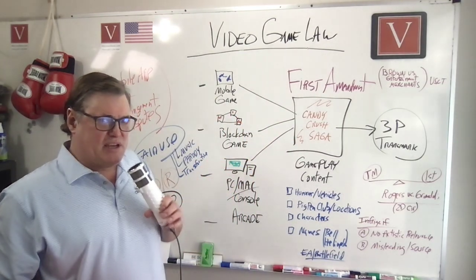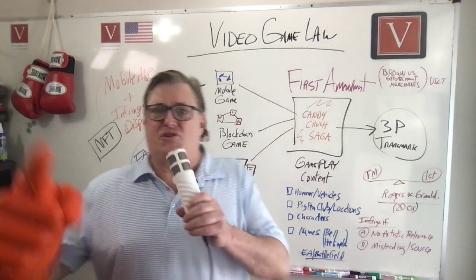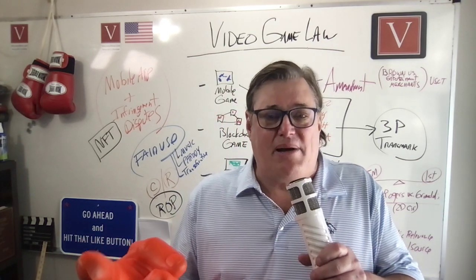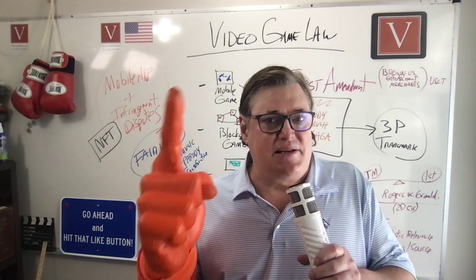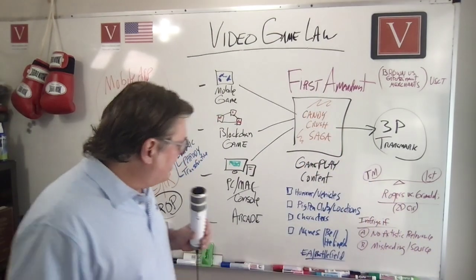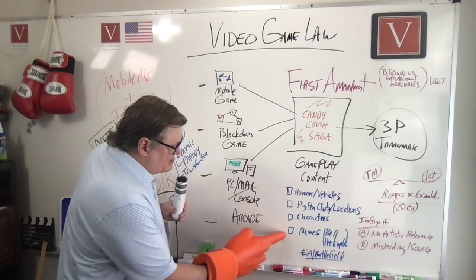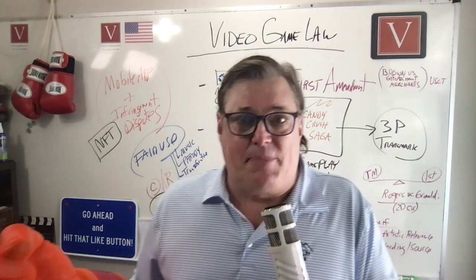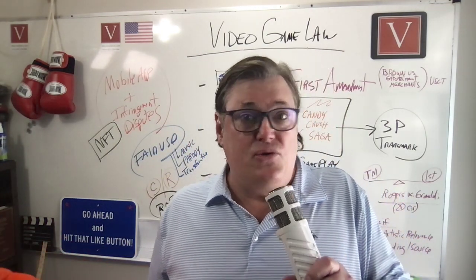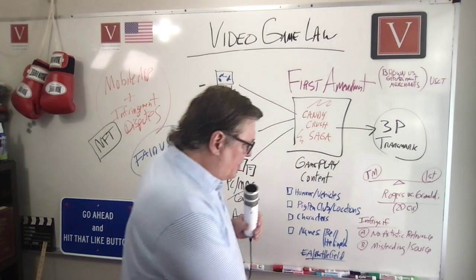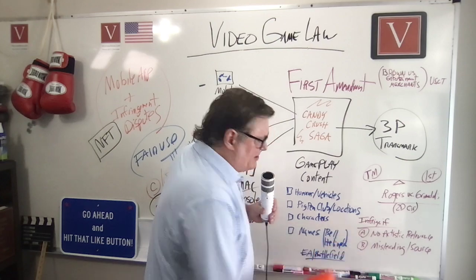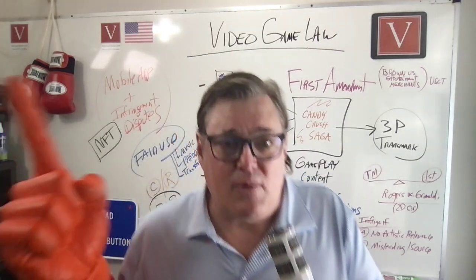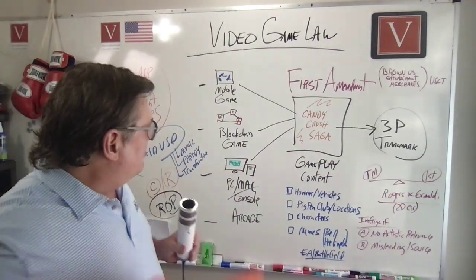What kind of content are you using in your video game? Characters — are you borrowing characters from Star Wars or Disney and bringing them into your video games? You need to be careful about that. Those finely defined characters can be subject to copyright protection. Names — there was a game where Electronic Arts had a Battlefield game and used the name Bell Helicopter. Can you use their brand? Once again, we get back to artistic relevance — was it misleading as to the source? Rogers v. Grimaldi, understanding that Brown v. Entertainment, the United States Supreme Court recognized First Amendment rights.